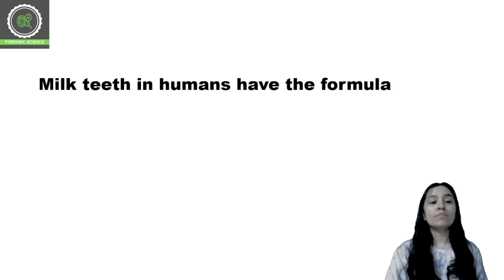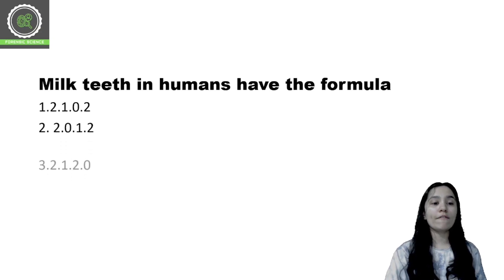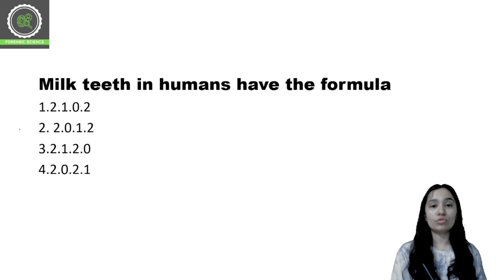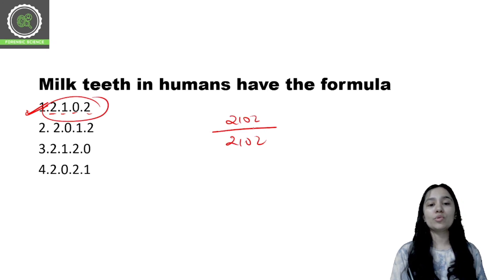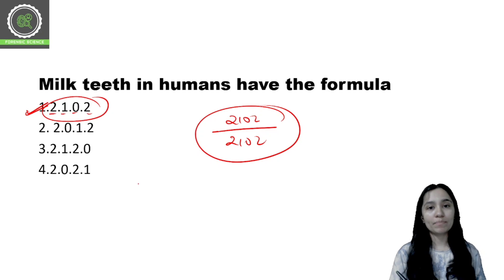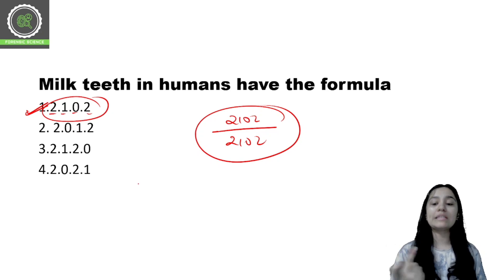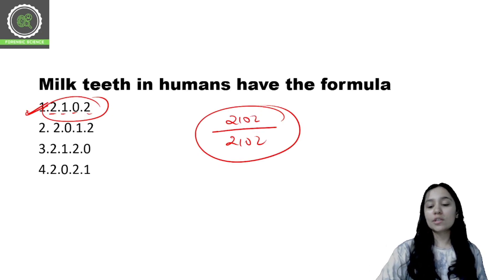Question number 10: Milk teeth in humans have the formula of — you have four options. The correct option is option A: 2102. So 2102 by 2102 is the milk teeth (deciduous dentition) formula. That is the last question for today's class.